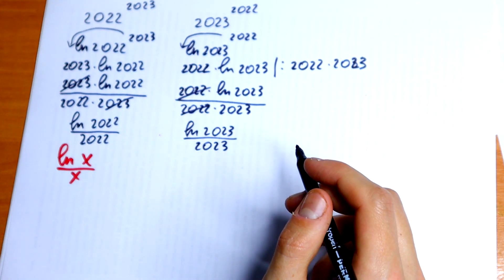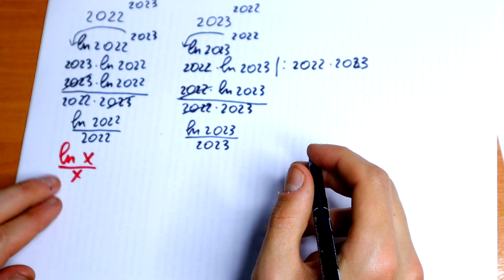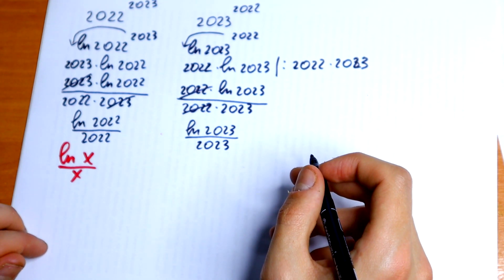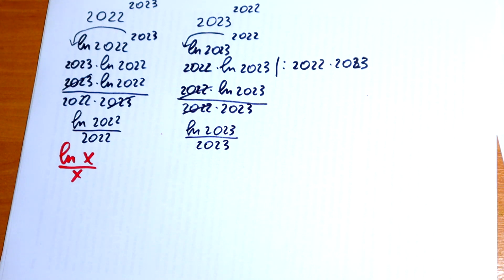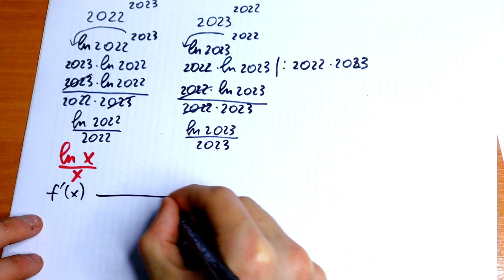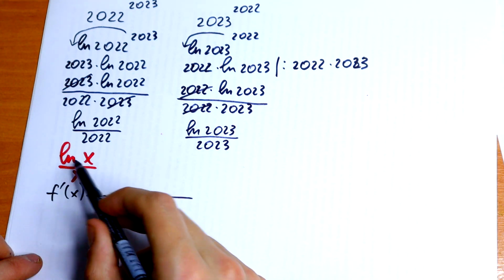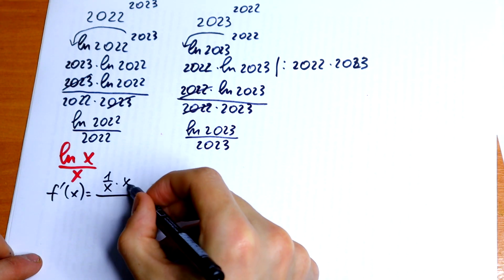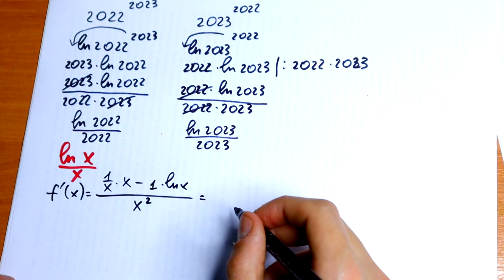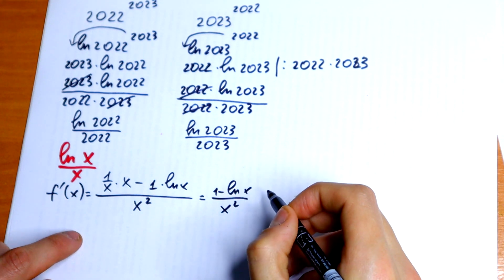Specifically, we need to know whether this function is decreasing or increasing. We can determine this using a derivative. Let's find f prime of x. We have a fraction, so by the quotient rule, f prime of x equals — in the denominator x squared, and on top the derivative of natural log x, which is 1 over x, times x, minus 1 times natural log of x. Simplifying, this equals 1 minus natural log of x, all over x squared.